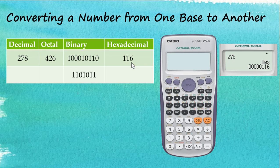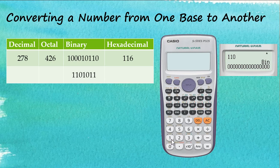Let's try another example. This time we have a binary number. Let's clear the screen first, then go to binary mode. The number is 1101011, so we enter 1101011 and press equal. Now this number is stored in binary.